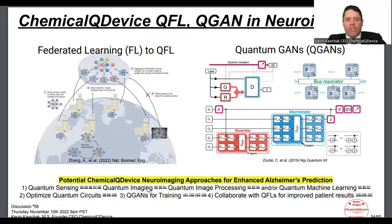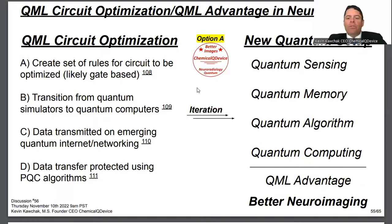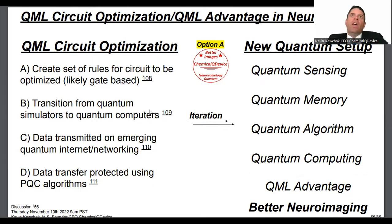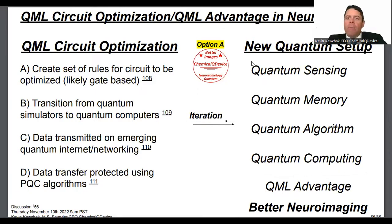There are other aspects: quantum sensing, quantum imaging, and quantum image processing or QIP, which is more time complexity — inserting qubits like red, green, blue with an alpha qubit. Circuit optimization is also key. A K&N circuit was compressed significantly in number of gates through optimization. Even with better hardware coming, optimizing circuits means you can get better QML advantage for better neural imaging.